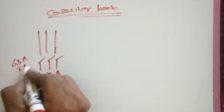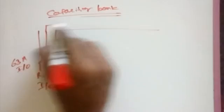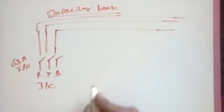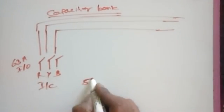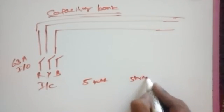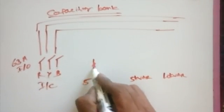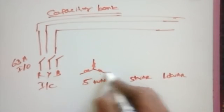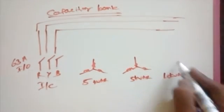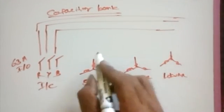Now I choose for 3 steps, that means 5 kVR, then 5 kVR, then 5 kVR, then 10 kVR. This is for capacitor connecting symbol. Let's connect.